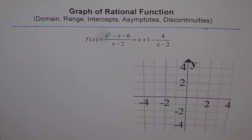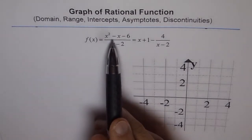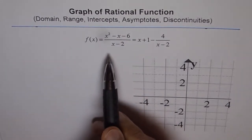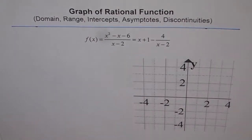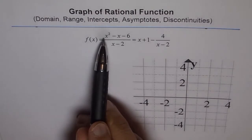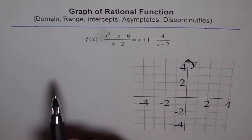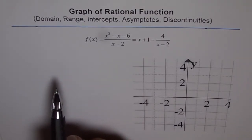Graph of Rational Functions. Here we are considering a couple of videos with oblique asymptotes. Let's look into this function: f(x) equals 2x² minus x minus 6, divided by x minus 2. As you can see, the degree of the numerator is one more than the degree of the denominator. So that is the case of an oblique asymptote — whenever the degree of the numerator is one more than that of the denominator, you get an oblique asymptote.